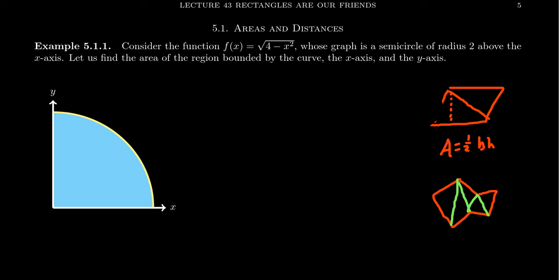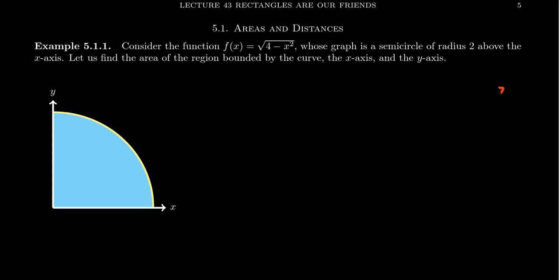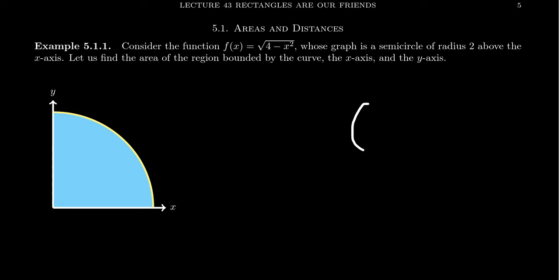Dealing with polygons and area is not such a big deal — it all comes from the area formula of a rectangle. But what happens when the region is bounded by curvy things? What if you want to find the area of an ellipse, or just a circle?